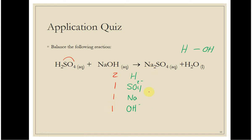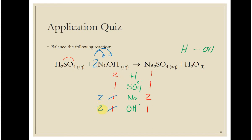On the right, we have two sodiums, one sulfate — because it's not in parentheses — and remember, this is not two hydrogens, it's one hydrogen and one hydroxide. So this is not balanced. We want to do hydrogen and oxygen last, so I'm going to focus on sodium. Sodium says two on the right, one on the left. I'm going to add a two in front of sodium hydroxide. That two applies to both sodium and hydroxide, so we have two sodiums and two hydroxides.